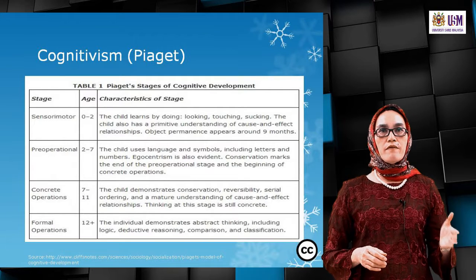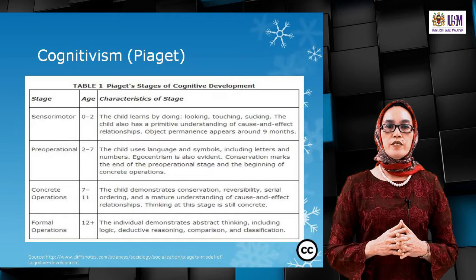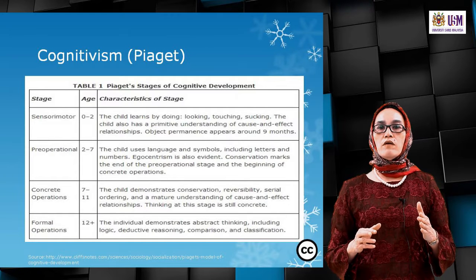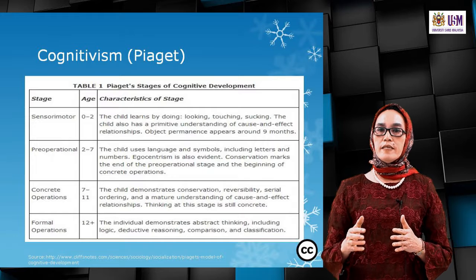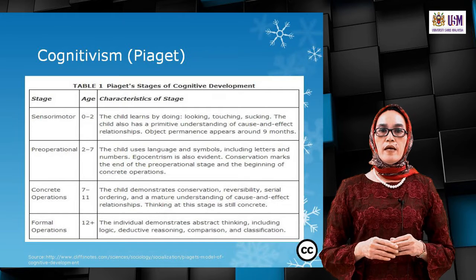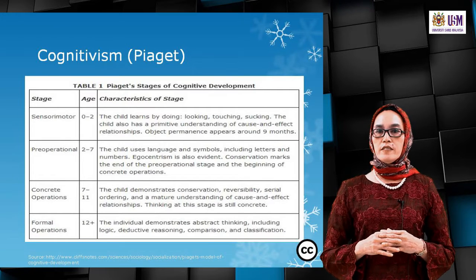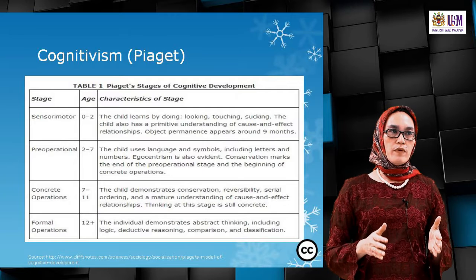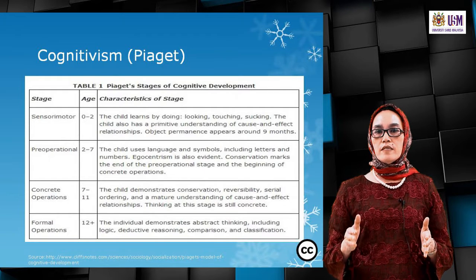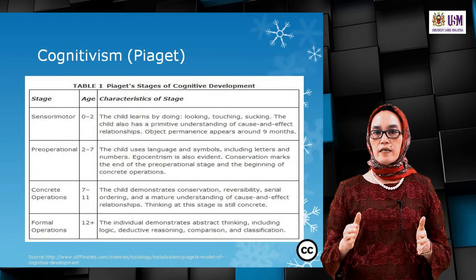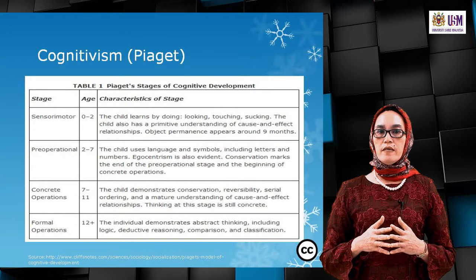From seven to eleven years old is the concrete operational stage, where the child demonstrates conservation, reversibility, serial ordering, and a mature understanding of cause and effect relationships. At this stage, thinking processes take place, but at a concrete level.